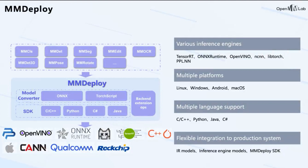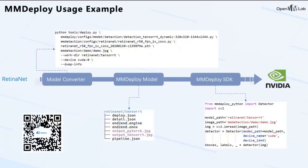MMDeploy allows users to develop with different languages and can be flexibly integrated into a production system. For example, you can just use the IR model or inference engine models, or integrate the whole SDK. Here is an example of how to use MMDeploy to deploy a model to NVIDIA GPUs. The first step is to run a single deploy script to convert the Python model to a TensorRT engine. Then we obtain a result model with binary files and config files. Next, we can use the Python SDK or C++ SDK to run the optimized models on GPU and enjoy the acceleration.